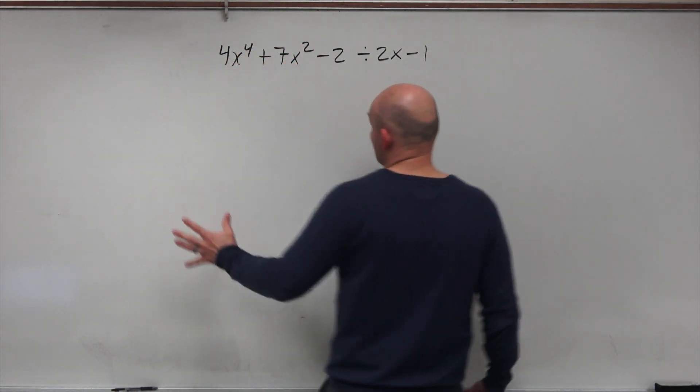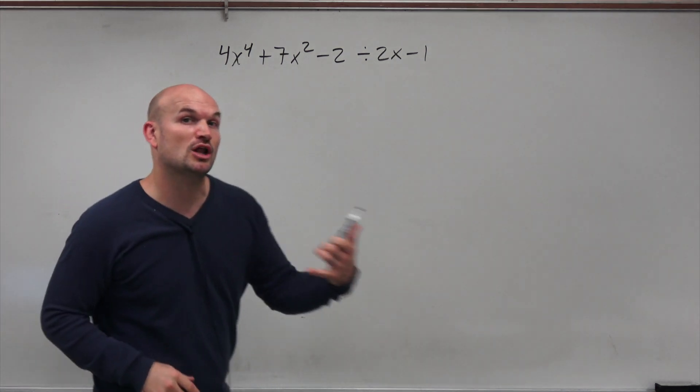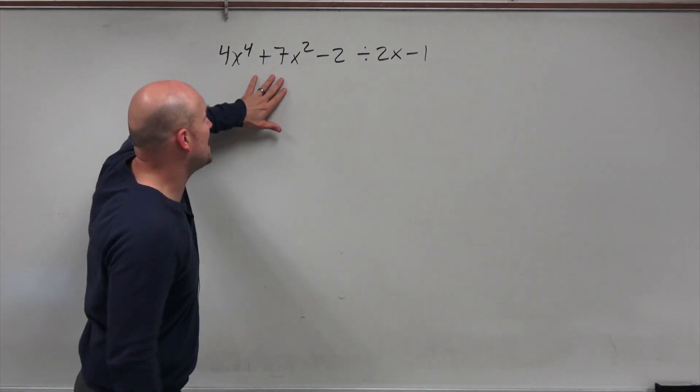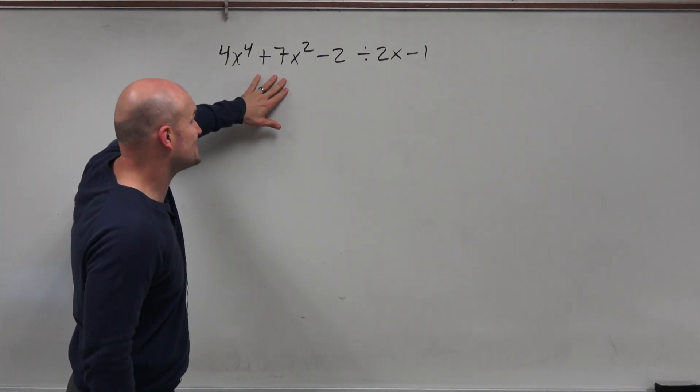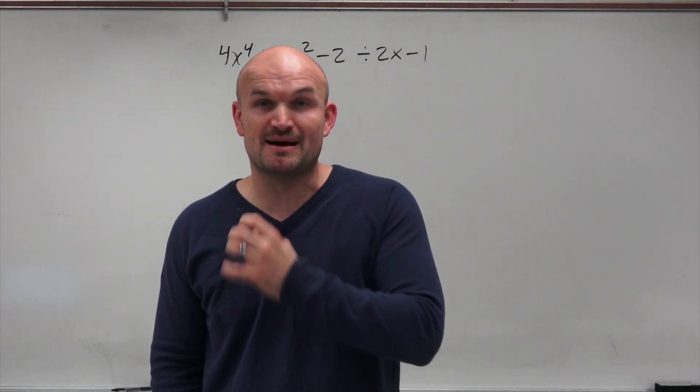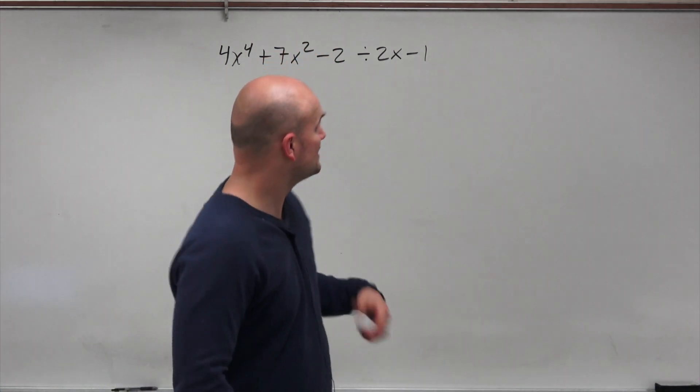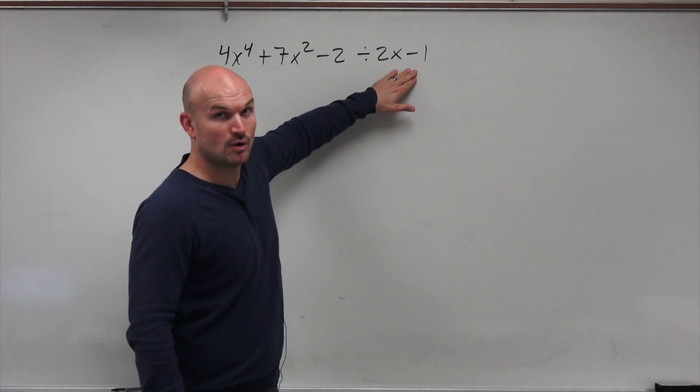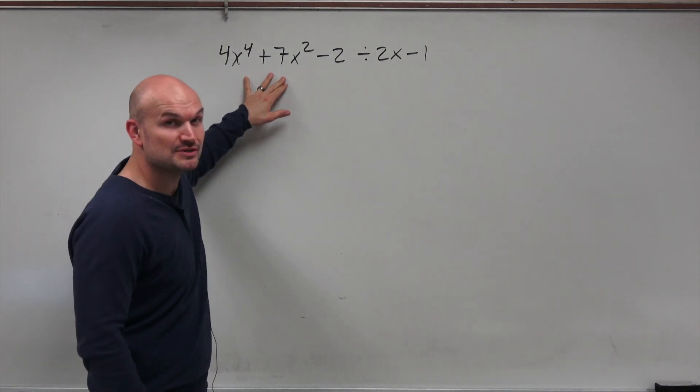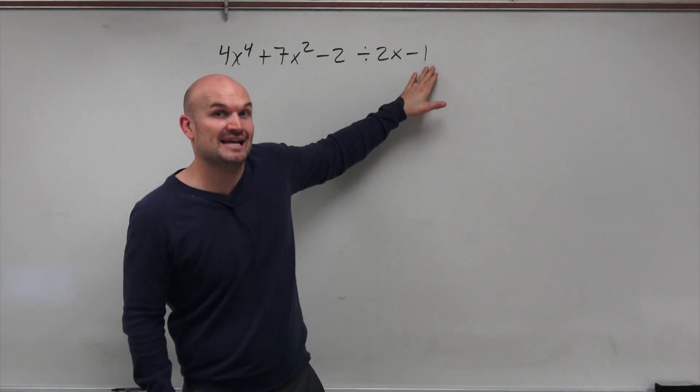If we were talking about real division, we'd be talking about how many times does 2x minus 1, which we call our divisor, divide into this polynomial, 4x to the fourth plus 7x squared minus 2, our dividend. And the number of times that 2x minus 1 divides into it is what we're going to call the quotient. If 2x minus 1 evenly divides into this polynomial, then we're going to call 2x minus 1 a factor.